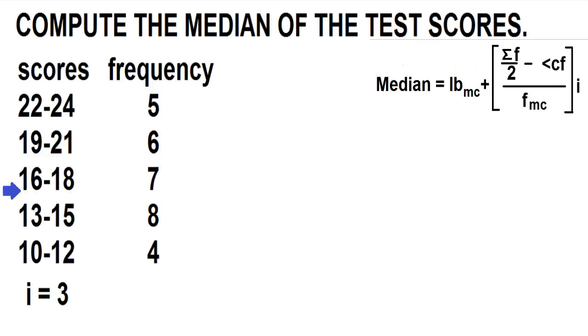You can also find the class width by counting, starting from the lower limit to the upper limit. 10, 11, 12 is 3. 13, 14, 15 is also 3.